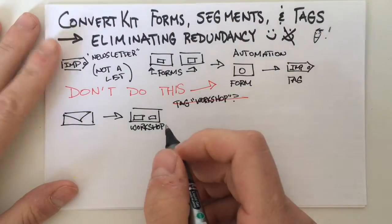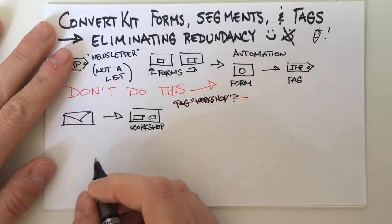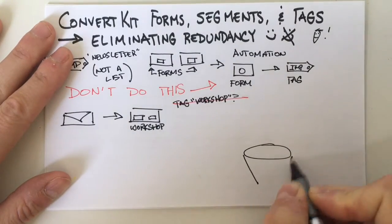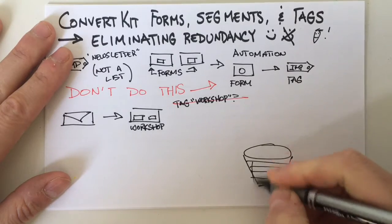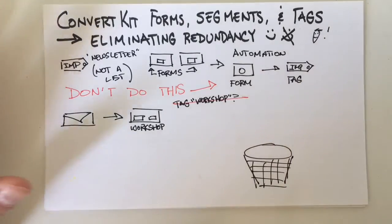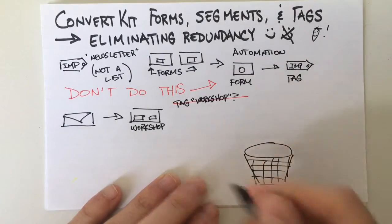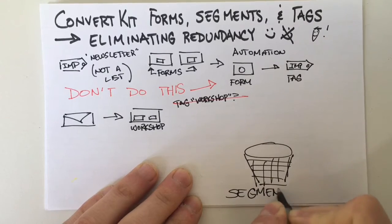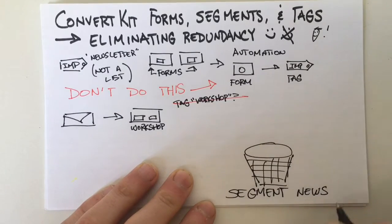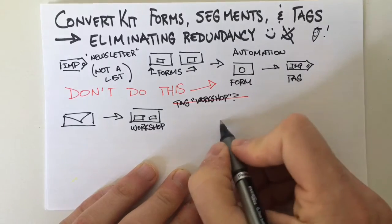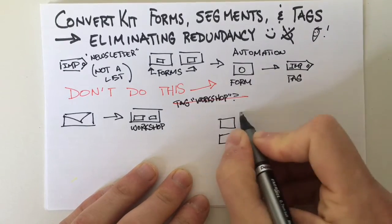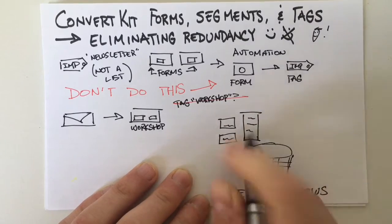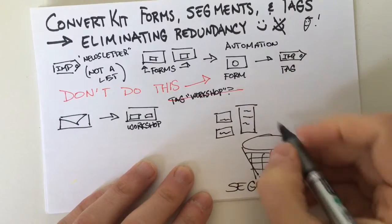So what this means for your newsletter is that you're going to create a segment. I like to think of segments as buckets — just like a bucket. Within this segment, call it the newsletter segment. I'm going to put in all of the forms, all the landing pages — all the forms and landing pages of people that I want to receive this newsletter.